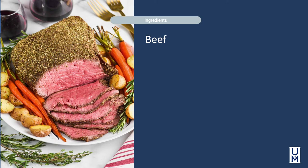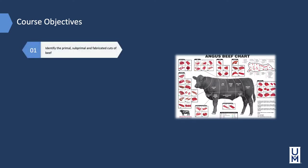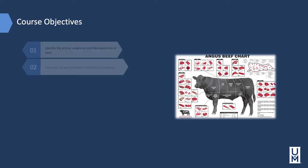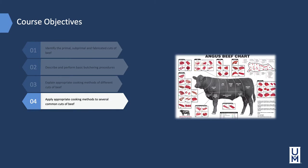In this module we'll be discussing beef — it's what's for dinner. The objectives for this module are: identify the primal, subprimal, and fabricated cuts of beef; describe and perform basic butchery procedures; explain appropriate cooking methods for different cuts of beef; and apply appropriate cooking methods to several common cuts of beef.